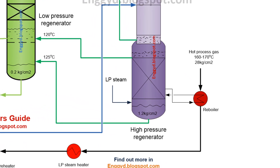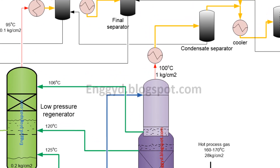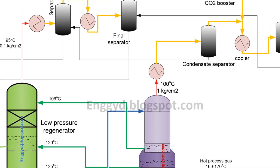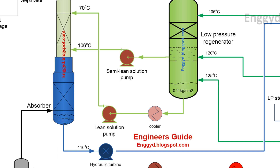The process gas from the low temperature shift converter is preheated before entering the reboilers, where steam is generated. The steam is then used to strip the CO2 from the absorbent in the regeneration towers. The semi-lean solution from the regeneration towers is flashed across the level control valves and enters the second regeneration tower, where it is further stripped of CO2. The lean solution is then collected and cooled before being recycled back.